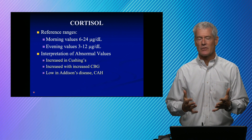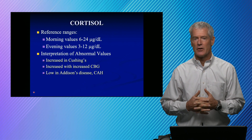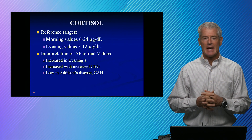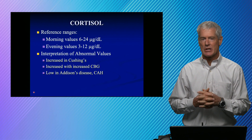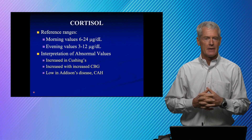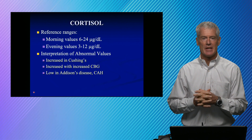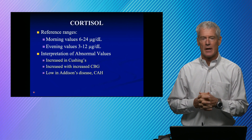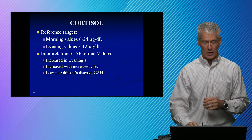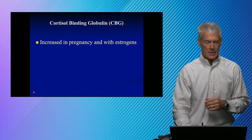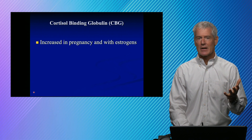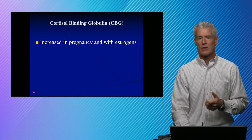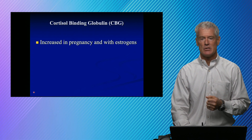Cortisol is low in Addison's disease, which is an autoimmune destruction of the adrenal gland. If you have CAH — congenital adrenal hyperplasia — that's a deficiency in the enzymes required to synthesize cortisol, so cortisol will be low. CBG has a big impact on total cortisol. Pregnancy and estrogen administration are going to increase binding globulins including CBG.